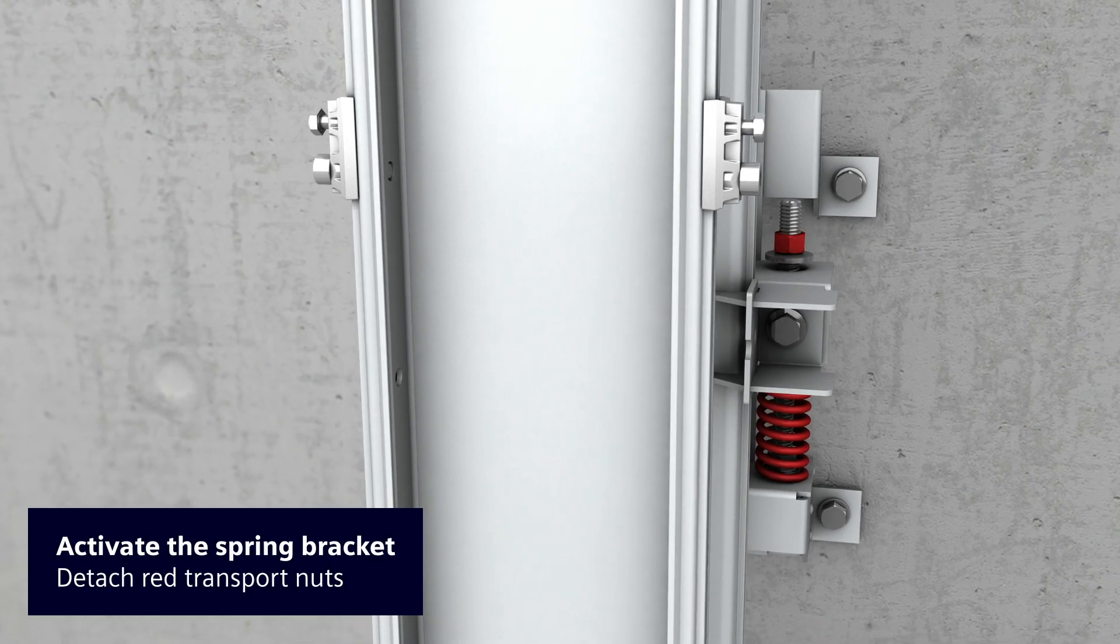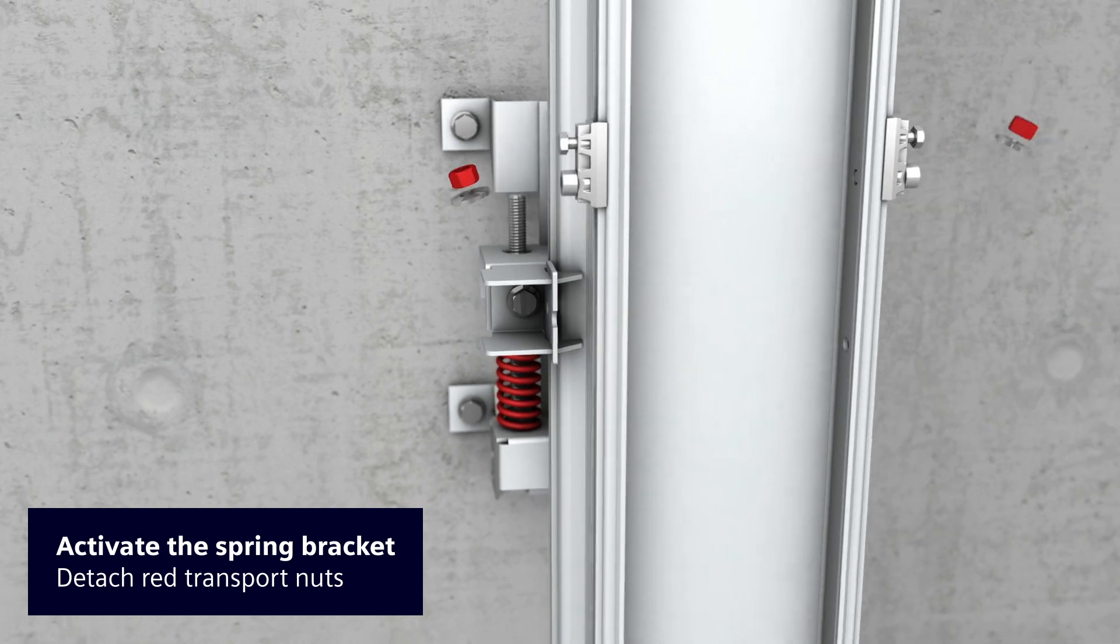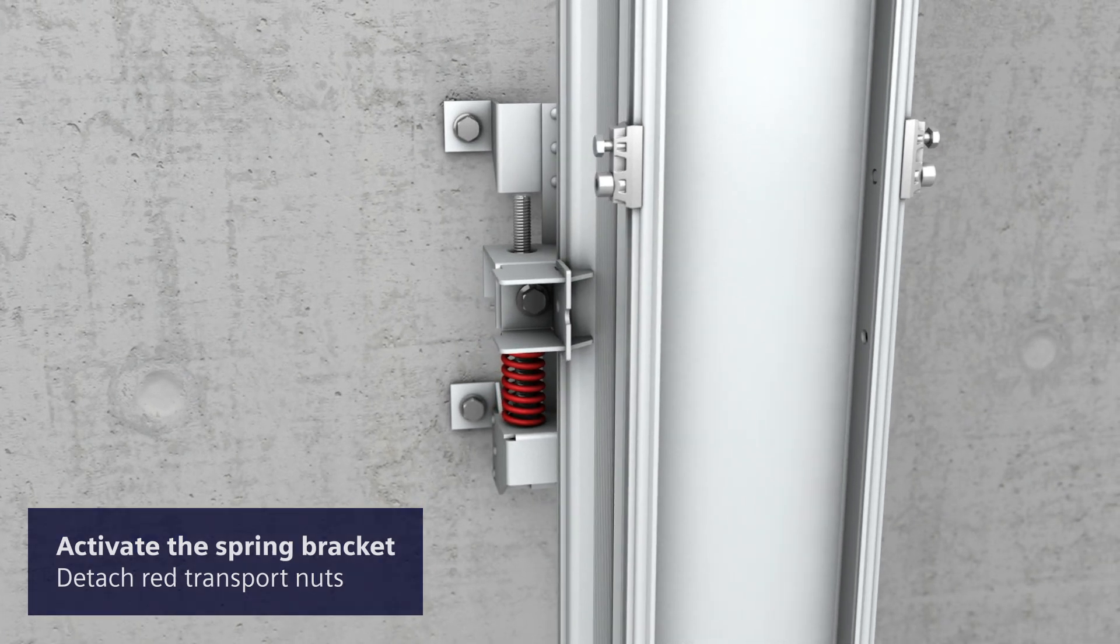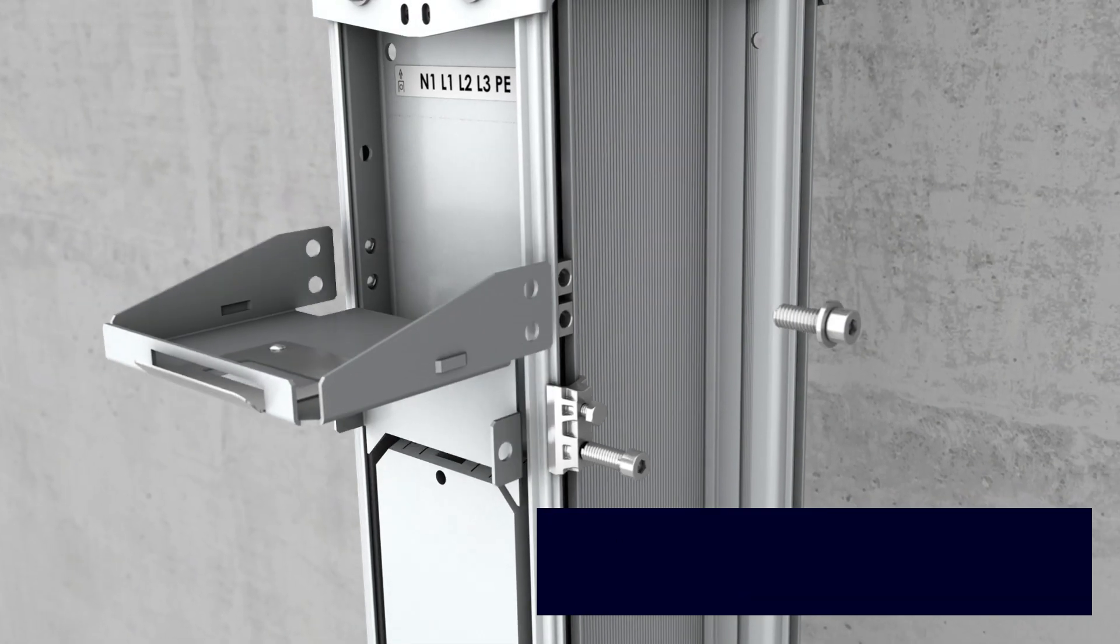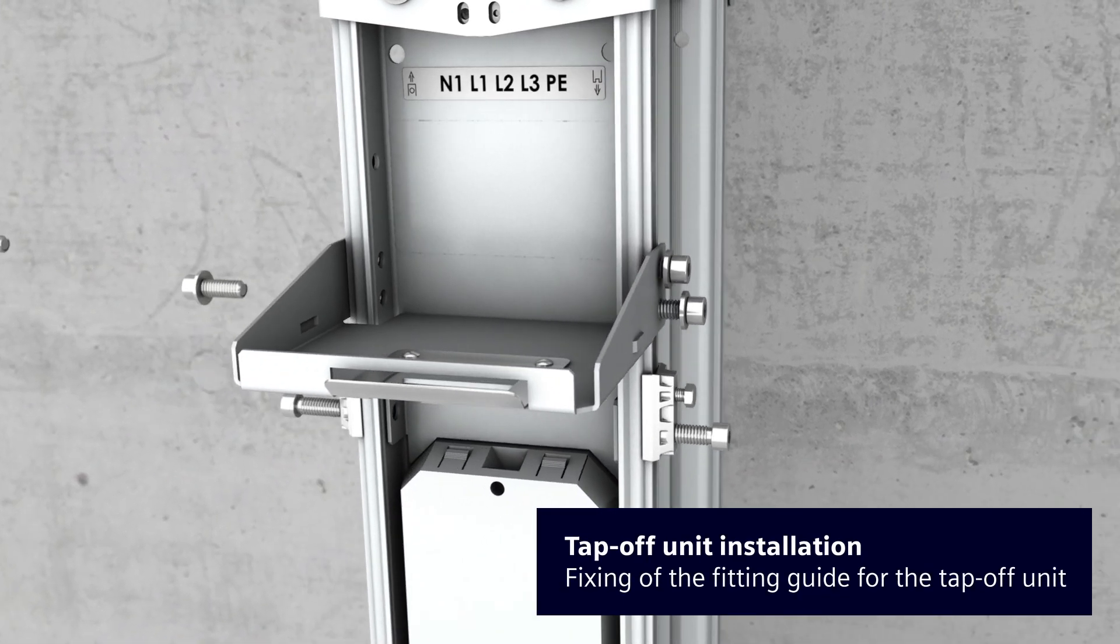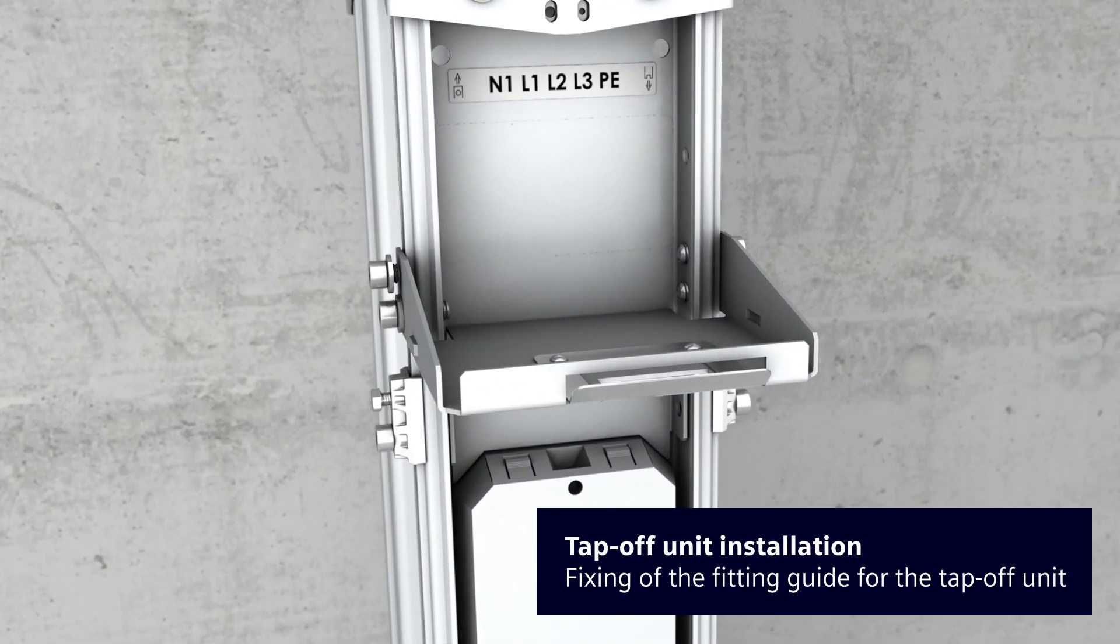The spring bracket becomes functional with the removal of the red nuts for transport protection. The fitting guide is then attached to the trunking unit before the tap-off unit is plugged on.